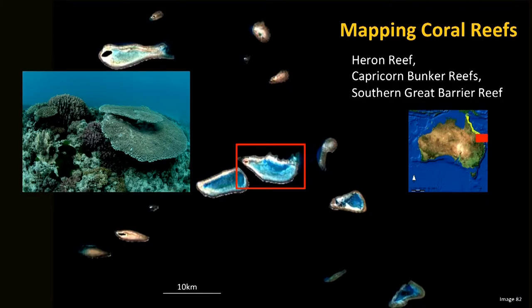Now we talked about seagrass environments but in the same way we are looking at coral reef environments also. An area where we do a lot of research is in the Capricorn Bunker Group, which is part of the Southern Great Barrier Reef and more specifically on Heron Island. Heron Island is a coral reef island with beautiful corals, and it is also an area where we have done work for the last 12 years.